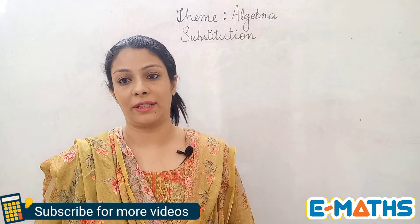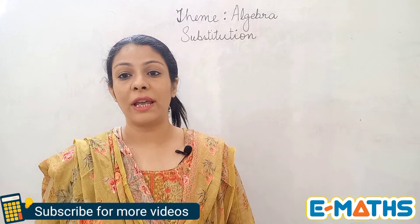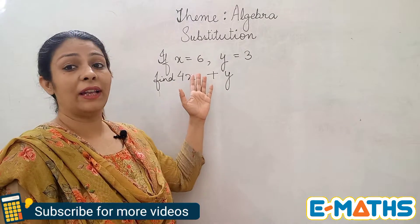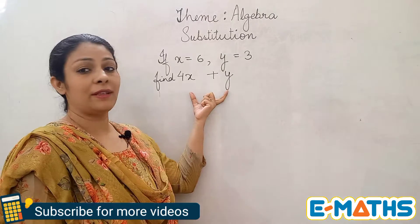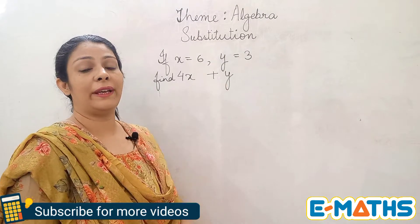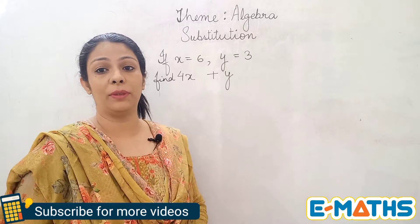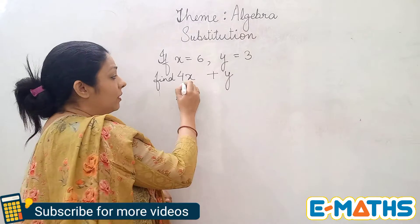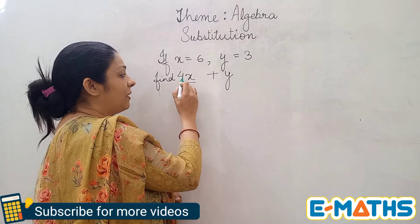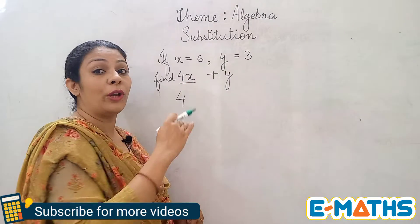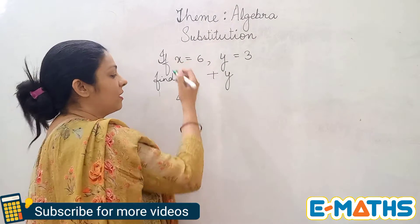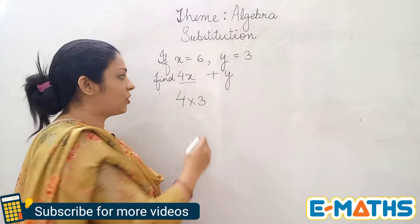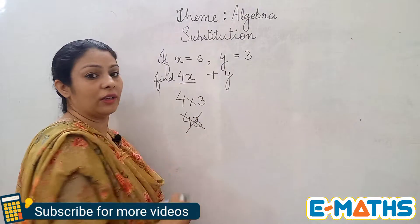Let's start the topic. I have written a question on the board in which I have given the values for x and y, and the expression in which I'm going to put these values is 4x plus y. Now I'll tell you how we can put in the values. The 4 will remain as it is. Now, 4 into x — here there is no sign between this 4 and this variable x, which means we are going to multiply by the value of x. You can put a multiplication sign and then write a 3.